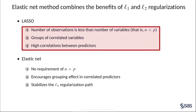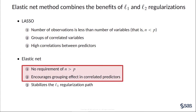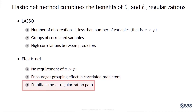Third, if the variables have high correlations, you cannot get a good model by the lasso method. There are two parts to the elastic net penalty: the L1 part generates a sparse model, and the L2 part removes the limitation of N less than P and encourages the grouping effect among predictors with high correlations. Also, the elastic net solution path is smoother and more stable than the lasso path.